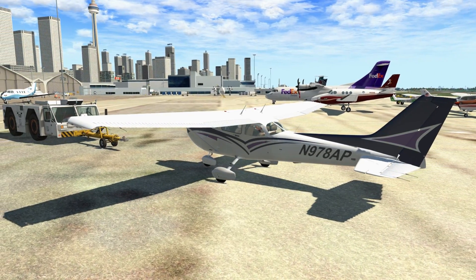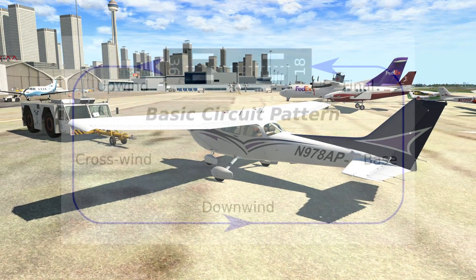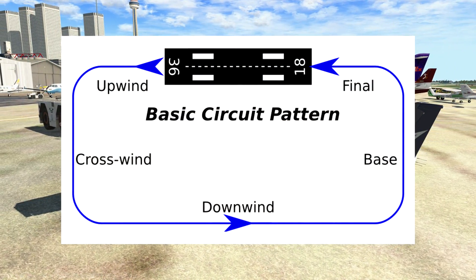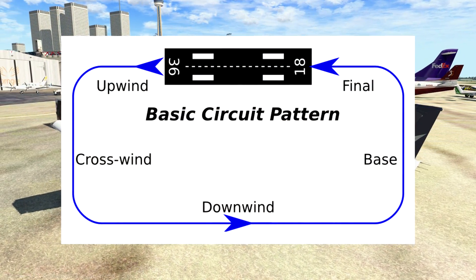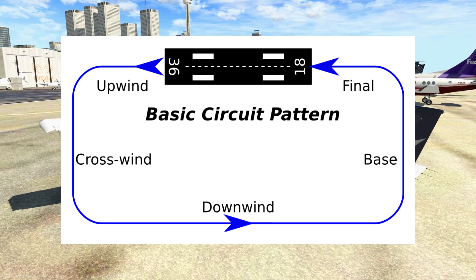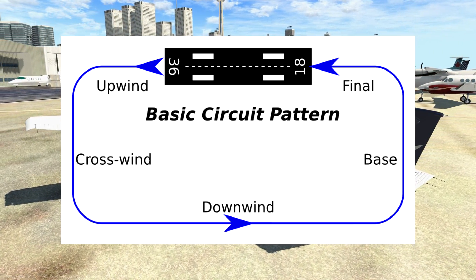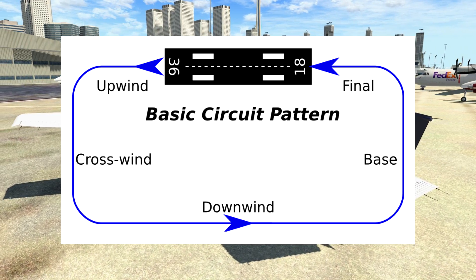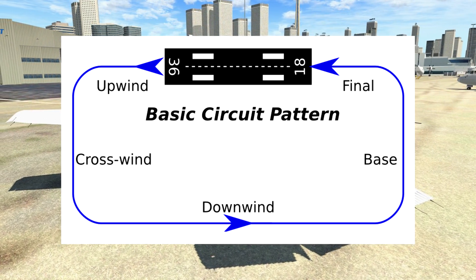What is a circuit? A circuit is a path from takeoff, climb, turn to fly along beside the runway, then turn around again to land on the same runway in the same direction as we took off.